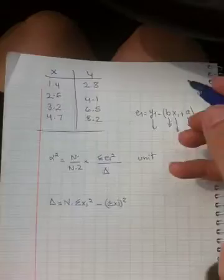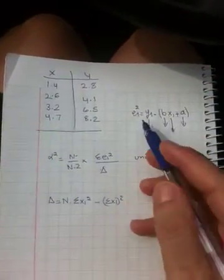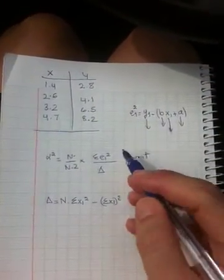And then, excuse me, you square e1. You square e2. You square e3. You square e4. And you add them.